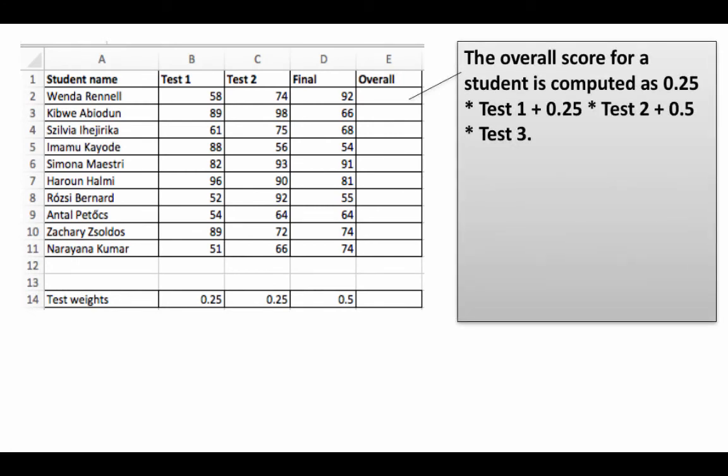One more practice problem. So, here we are saying you've got some students, you've got their scores in the first two tests and the final, and we are saying the overall score for a student is computed as 0.25 times the score in test one, plus 0.25 times the score in test two, plus 0.5 times the score in test three or final, right? I should have said final here. So, that's what the total score is. So, once again, of course, you've got the 0.25, 0.25 and 0.5 right here.